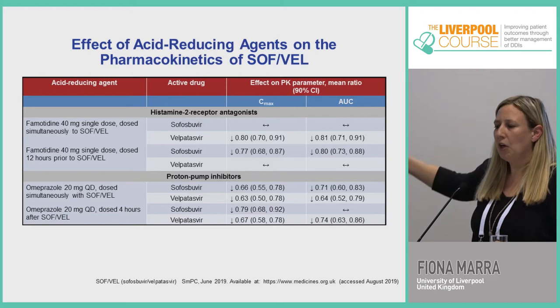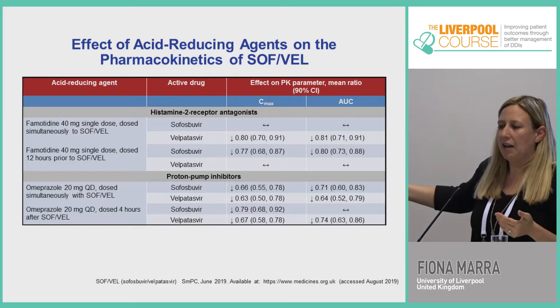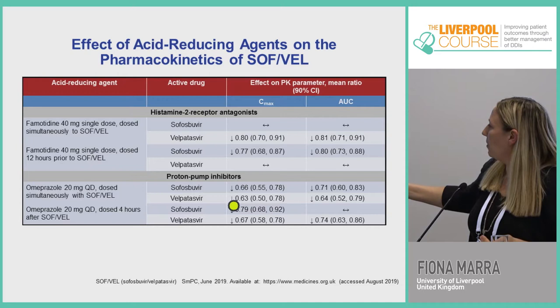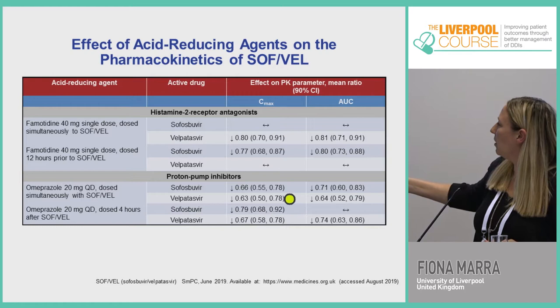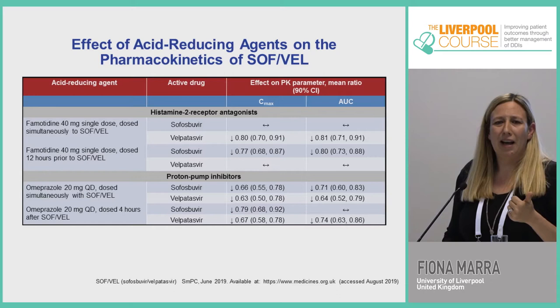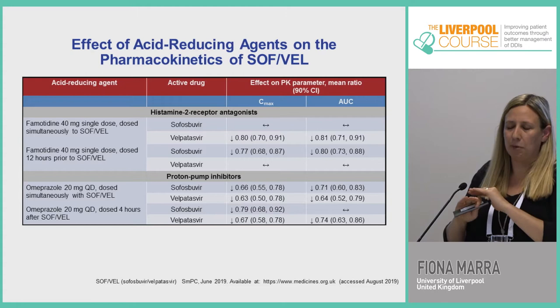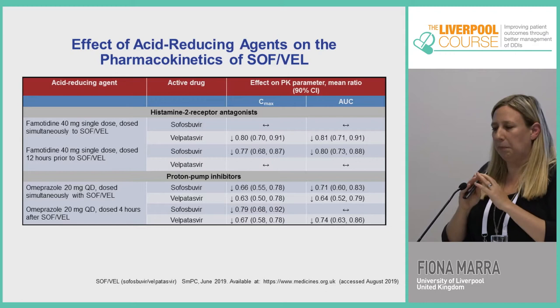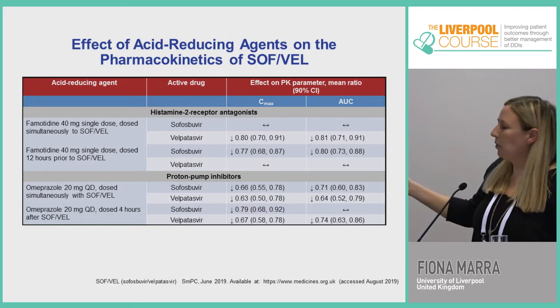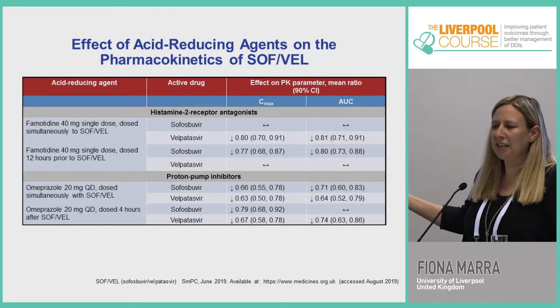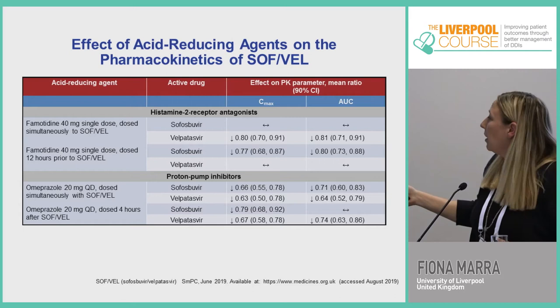For sofosbuvir/velpatasvir (Epclusa), there is more of a reduction than with ledipasvir — up to 50% reduction with omeprazole. First, always check if the patient is on a PPI and whether it's appropriate. Can you stop it? Proton pump inhibitors are the most over-prescribed drug in the UK. In Glasgow we treat over 1,500 patients each year with Hepatitis C, at least 300 are on PPIs, and we stop them in the vast majority — they don't need to restart.